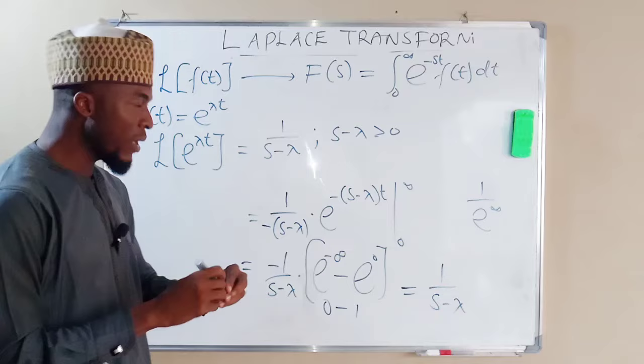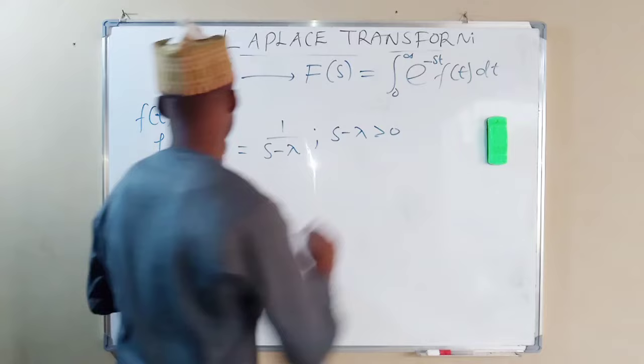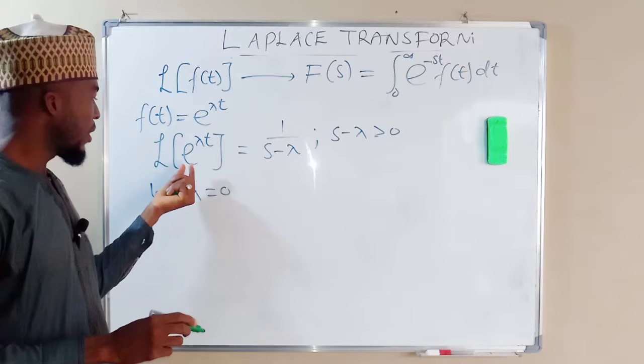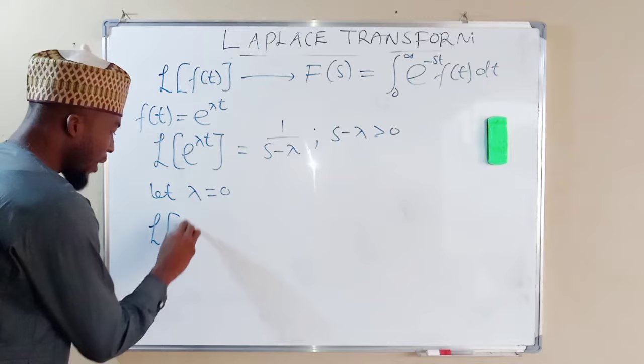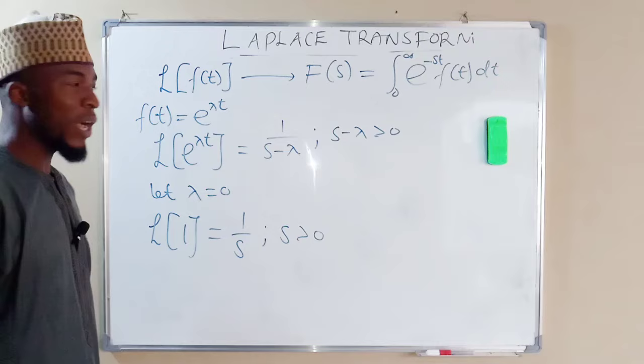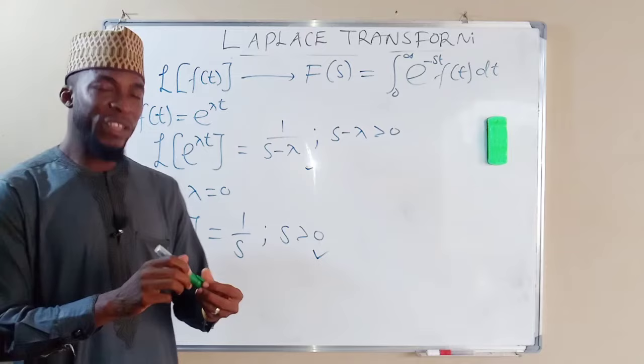Now to obtain the second formula: since λ is a constant, let λ equal zero. Then zero times t equals zero, and exponential zero is one. So we have the Laplace transform of 1, which equals 1 over s, for s greater than zero. We have now obtained the first two equations.